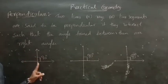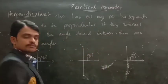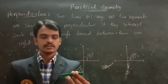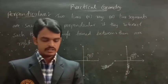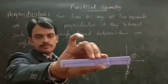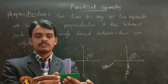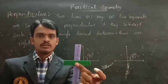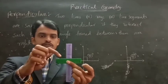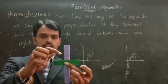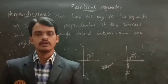Next, line segments. Look at your line segments. This is a line segment AB and this is another line segment CD. So these two line segments intersect. After intersecting, the angle formed between them is 90 degrees. Then these two line segments are perpendiculars.